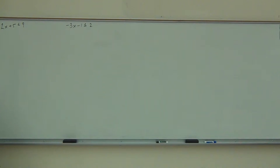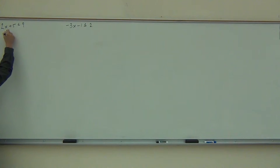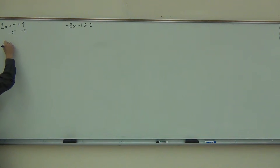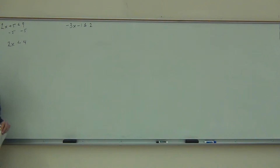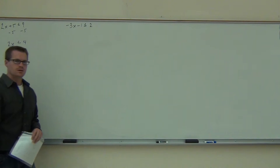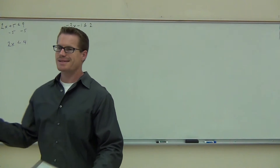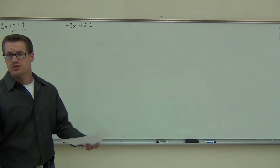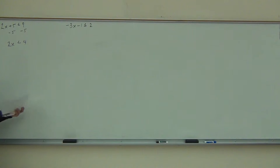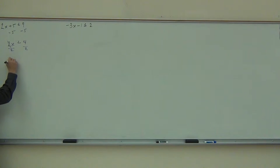Everybody, what's the first thing we're going to do on this problem? Good, so we're going to do that. And we get less than 4. Next step, of course, we have to solve for x — we treat this kind of like an equation. The only difference is if we divide by a negative, we flip it around. So we divide by 2 on both sides. We get x, we get 2.